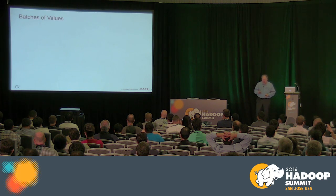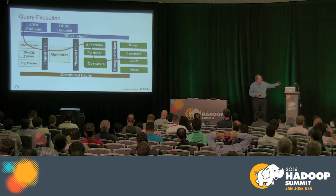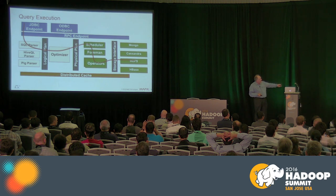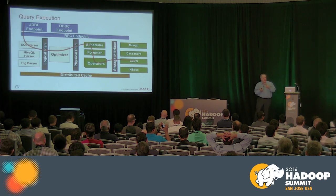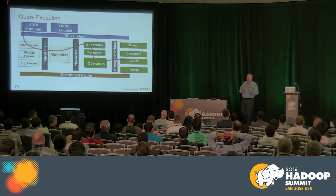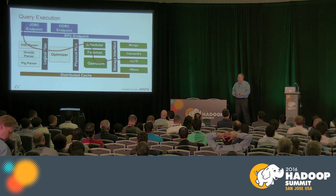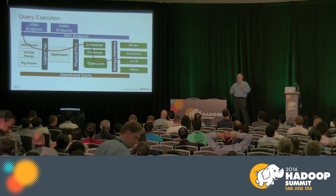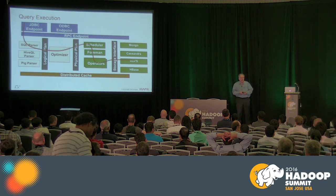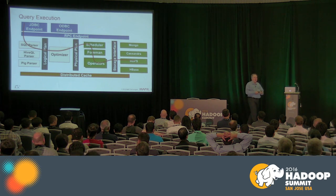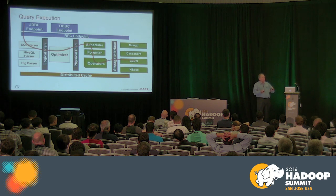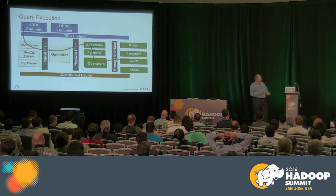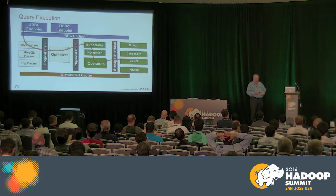There are some interesting characteristics in that architecture. The storage appliances — the scanners — have the property that they can inject optimization rules into Drill. So if you have a storage device or storage system or database with unusual properties, you can inject special optimizations for those interesting properties back into the optimization process. That's a very unusual property of Drill.